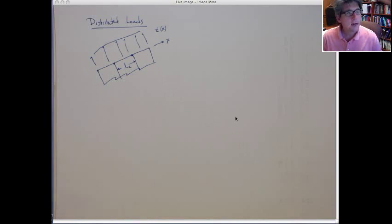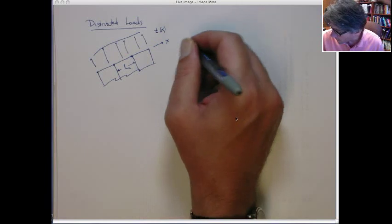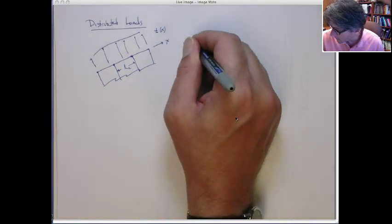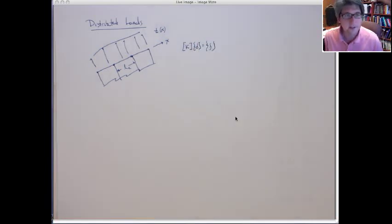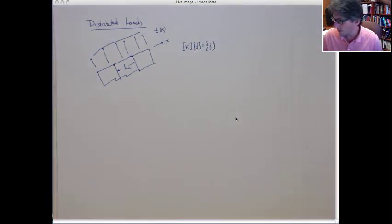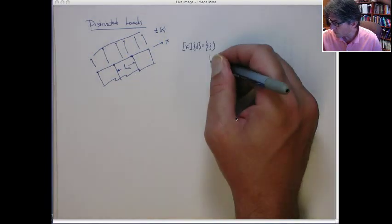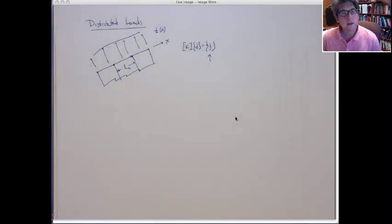This is the KD equals F, right? We've already shown that that's the discrete finite element equations. So how does this distributed load correspond to the discrete nodal forces, F?